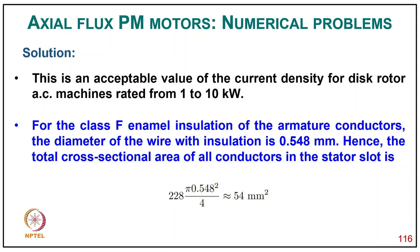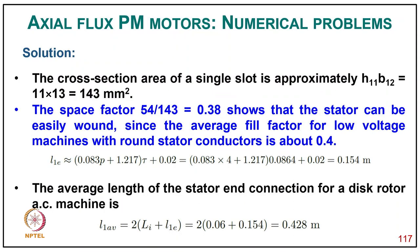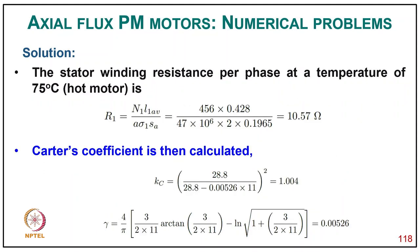Checking electrical loading, current density, and space factor: for two parallel wires, number of conductors per coil N1c = aw·N1/(S1/p·q1·x1) = 114; conductors per slot = 2×114 = 228. Rated input current per stator Ia = P_out/(2·m1·(1/2)·η·cosφ) = 2.57 A. Line current density peak Am = 14,360 A/m, which is rather low for a small PM AC motor. Conductor cross-section area S = π·da²/4 = 0.197 mm². Current density j = Ia/(aw·S) = 6.54 A/mm², acceptable for a disc rotor AC machine rated 1–10 kW. For class F enamel insulation, wire diameter with insulation is 0.548 mm. Total conductor cross-section in the stator slot = 228×π·(0.548)²/4 = 54 mm². Slot area ≈ h11×b12 = 11×13 = 143 mm², slot fill factor = 54/143 = 0.38, well within limits since average fill factor is 0.4 for low-voltage machines.